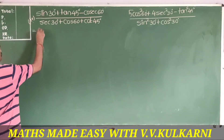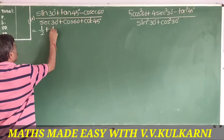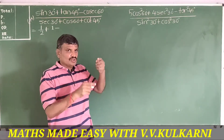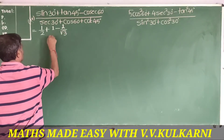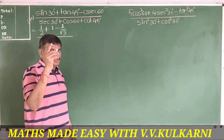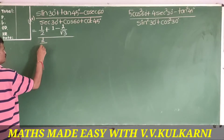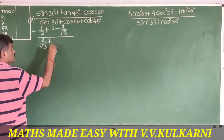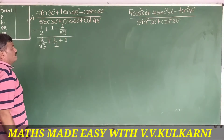sin30 is 1/2, tan45 is 1, sin60 is √3/2 so cosec60 is 2/√3, cos30 is √3/2 so sec30 is 2/√3, cos60 is 1/2, and cot45 is 1.